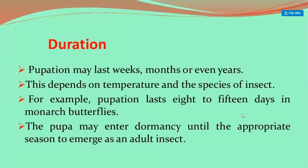The duration of the pupal stage can last a week, a month, or even years, depending on the temperature and species of the insect. For example, pupation lasts 8 to 15 days in the monarch butterfly. The pupa may enter dormancy until the appropriate season to emerge as an adult insect.